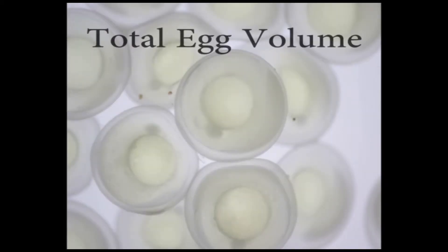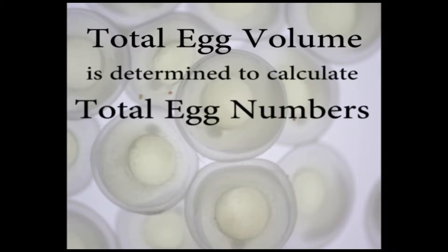The total volume of eggs can be determined at this time, which will be used to calculate total egg numbers utilizing a method known as volumetric displacement.